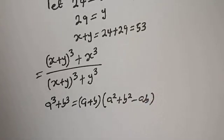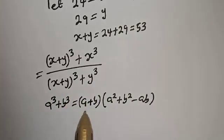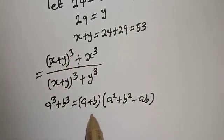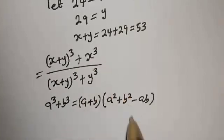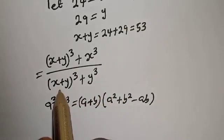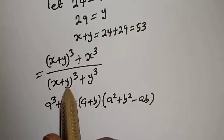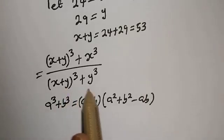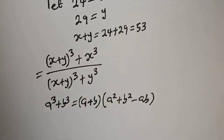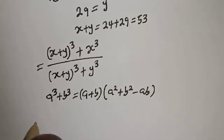From the numerator, a is equal to s plus y and b is equal to s. And from the denominator, a is equal to s plus y and b is equal to y. So let's substitute.